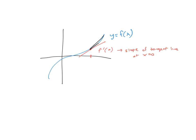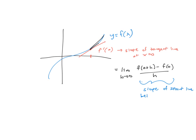In other words, algebraically, we define the derivative as the limit as h goes to zero of f of a plus h minus f of a over h. This ratio represented the slope of the secant line between the points (a, f(a)) and (a+h, f(a+h)).